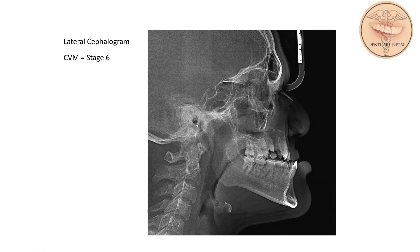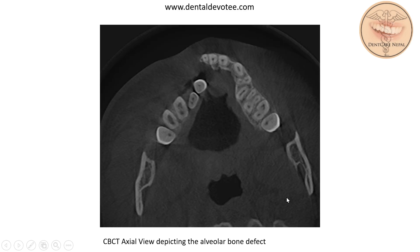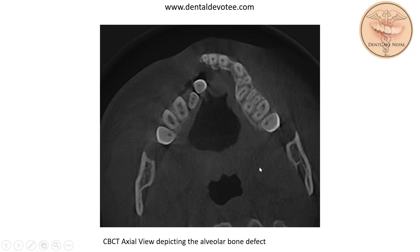This is the lateral cephalogram of the patient with CBM stage 6. We can see a concave profile — the upper lips are retrusive and lower lips are protrusive, with a deficient maxilla and mandibular axis. This is the CBCT image in axial view, where the cleft on the right side and alveolar bone defect is clearly present.